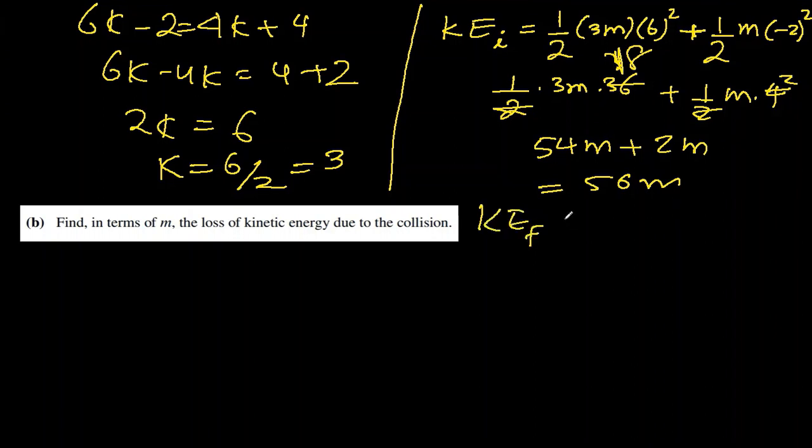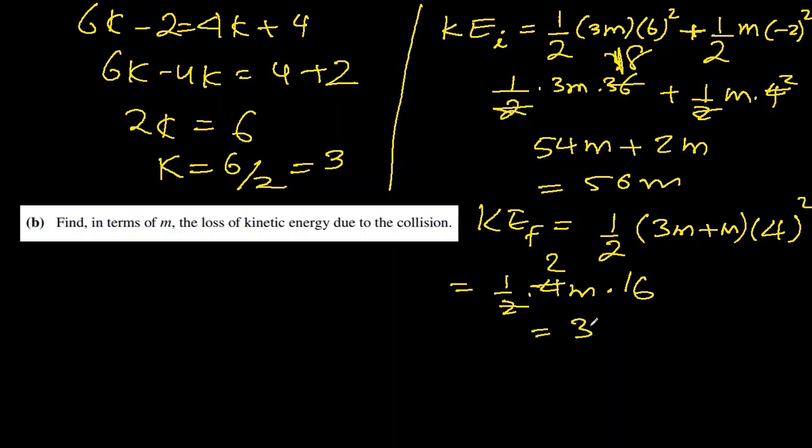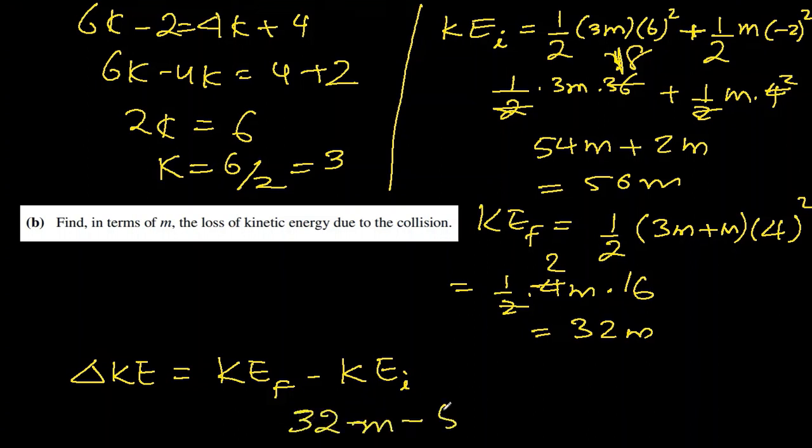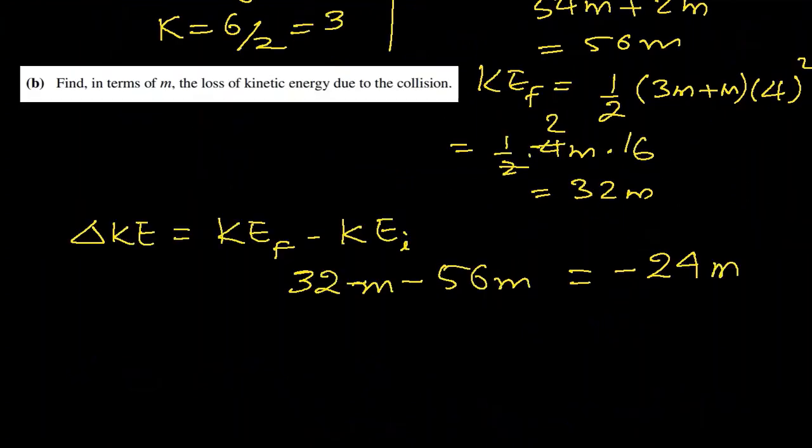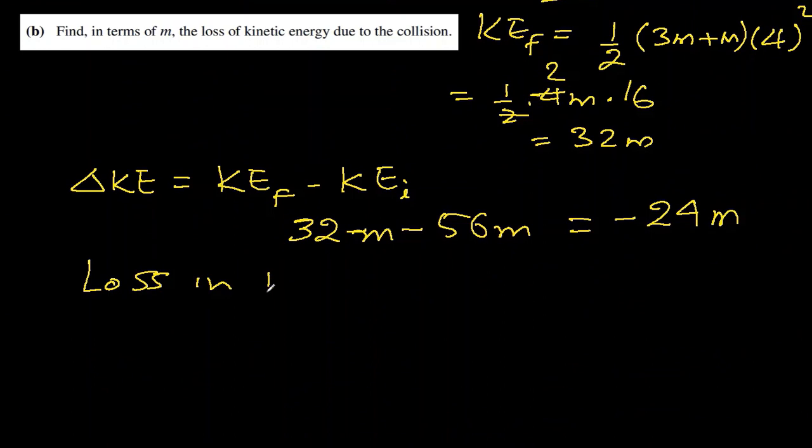Kinetic energy final will be half times 3M plus M, that is the total mass, times 4 squared. Half times 4M times 16 becomes 32M. The loss of kinetic energy, delta KE, will be kinetic energy final minus initial, which is 32M minus 56M. That is minus 24M. Since we're using the word loss, there's no need to write negative. So loss in kinetic energy equals 24M joules.